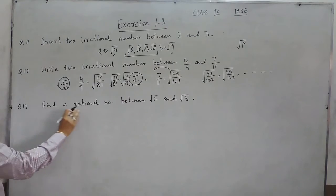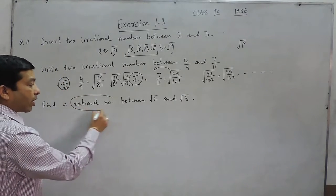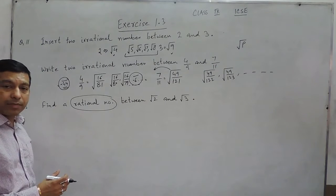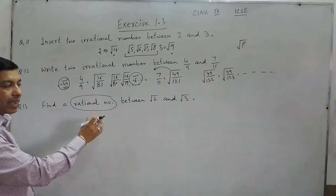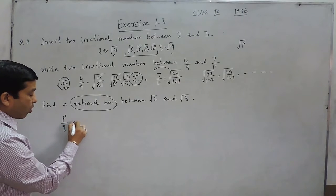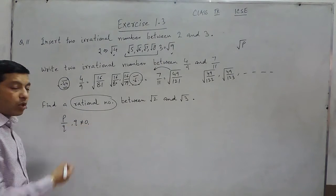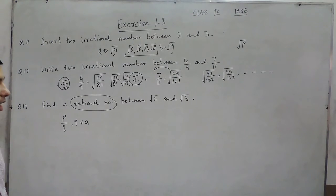Question number 13 is find a rational number between root 2 and root 3. Now when I am talking about a rational number, either this is a terminating decimal or this is a non-terminating repeating decimal which is in fractions in the form of p upon q, where q should not be equal to 0 and p and q should not have any common factor except 1. So that is the meaning of rational.